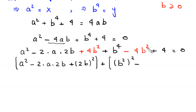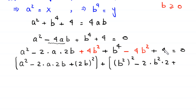The term 4b squared is the same as 2b squared, and the 4 at the end is the same as 2 squared, setting up the expression equal to 0.